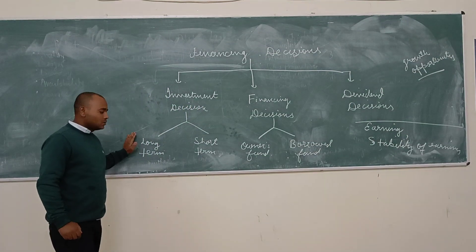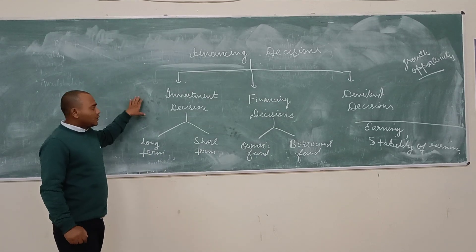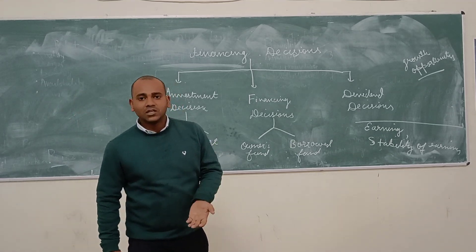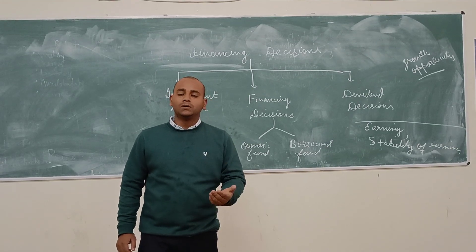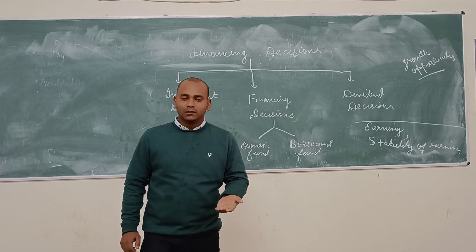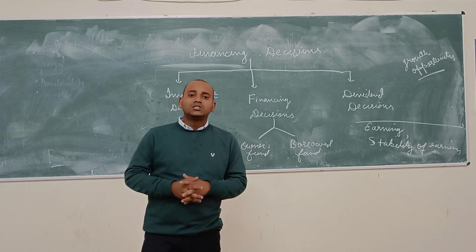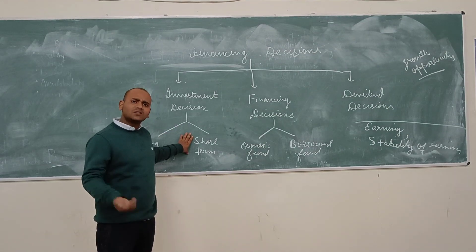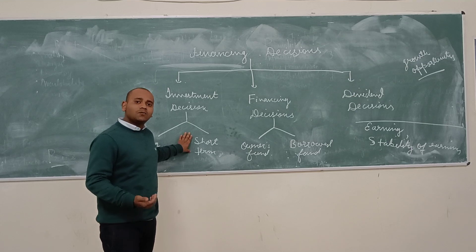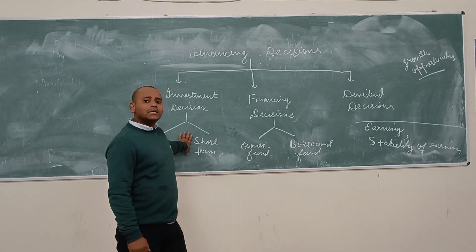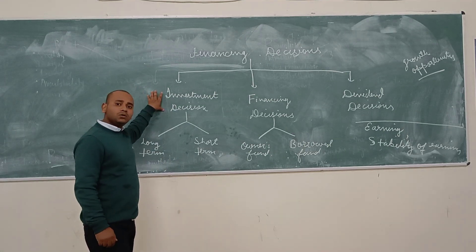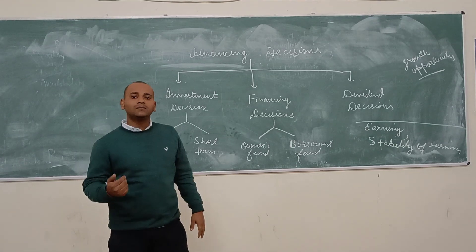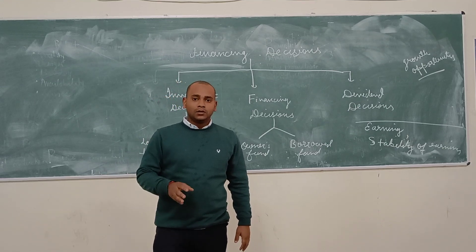Investment decisions are classified into two types: long term and short term. For example, if I want to start a factory, there is need to purchase land and machinery — this is a long-term decision where heavy amounts are involved, and once the decision is taken it is very difficult to reverse; we cannot easily get back the money. Short term means the day-to-day expenses once the building and manufacturing facility are prepared. Investment decisions must be taken wisely so that money is invested in the right way.